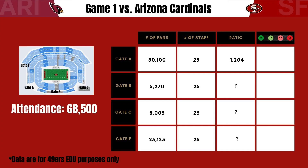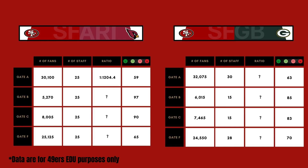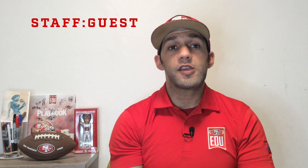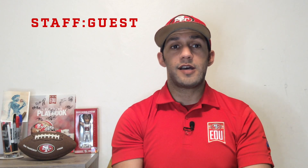Here's the data from game one. You'll see we organized the staff pretty evenly throughout, but fans didn't seem to get the memo. Here's a look at game two — we responded by changing where the staff is located, but we still didn't get the numbers we wanted at each gate. Here's a look at both data sets side by side. Take a moment to pause here, or even print out this page, and see if you can fill in the blanks. Remember, we're looking for the staff-to-guest ratio that gets us closest to an 80 score on the happy or not scale.